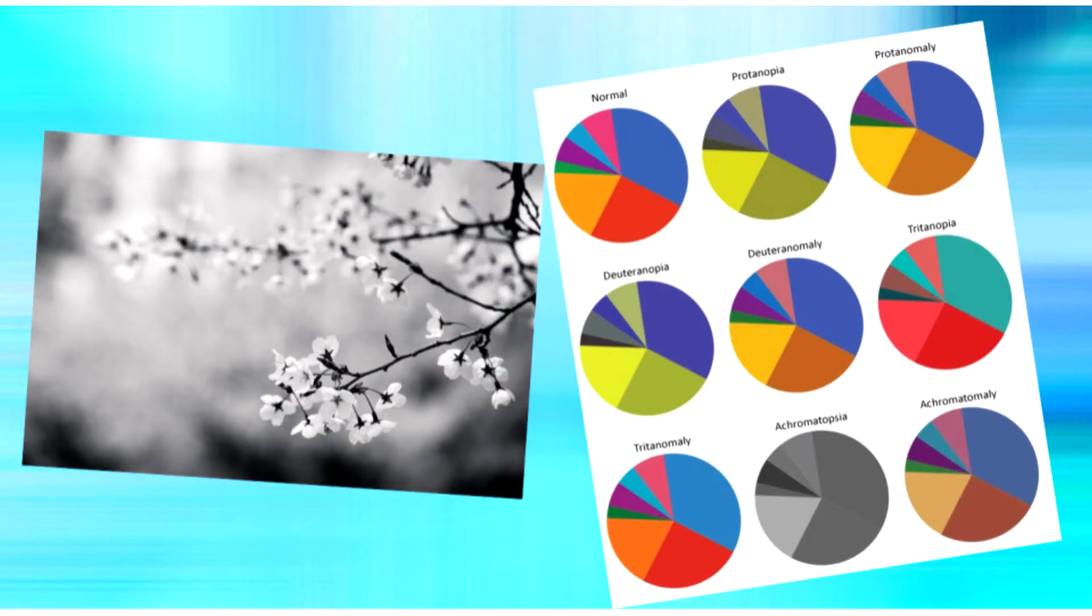A common misconception about colorblindness is that the person who is affected can see no color at all, or just in black and white. This is very rare and not true at all. In fact, a person with colorblindness can see color, just a limited spectrum. On average, they see about 10,000 hues, while a normal person with normal vision can see roughly 1 million.